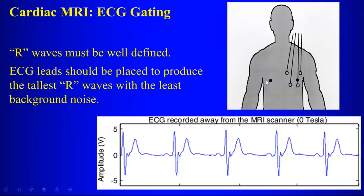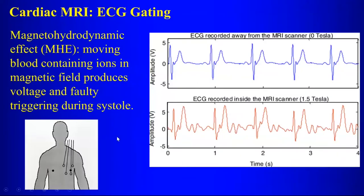You place the EKG leads and the cardiac gating will be based on the R wave. You get good R waves, and that is what the software interprets as the heartbeats and gates to. However, this is not so easy because of an effect called the magnetohydrodynamic effect, where moving blood in the aorta and cava contains ions, and when you place that in a magnetic field, it produces voltages picked up by the ECG leads, leading to faulty triggering during systole.